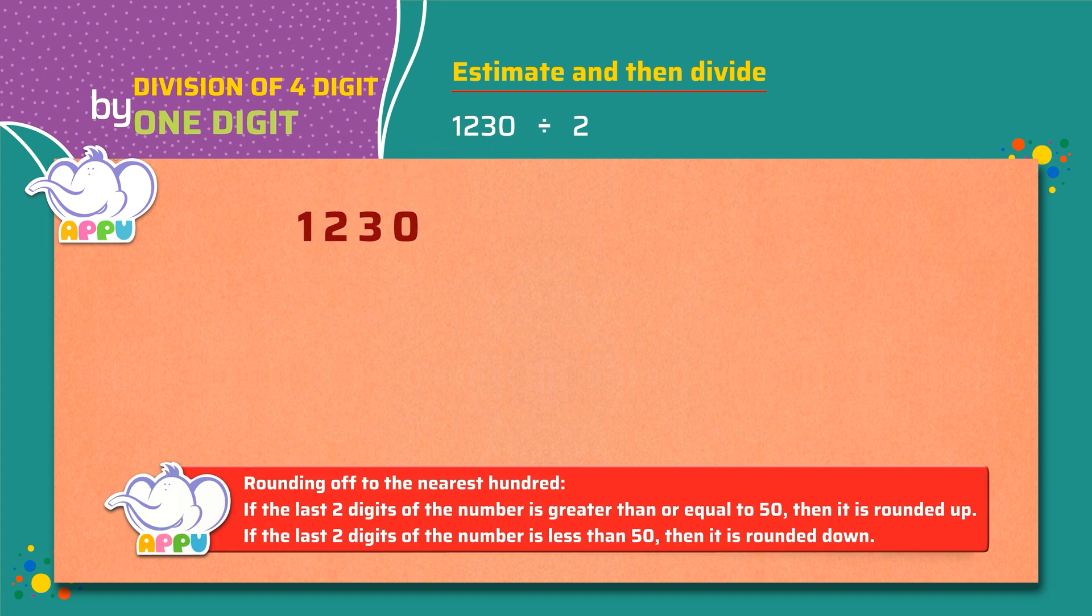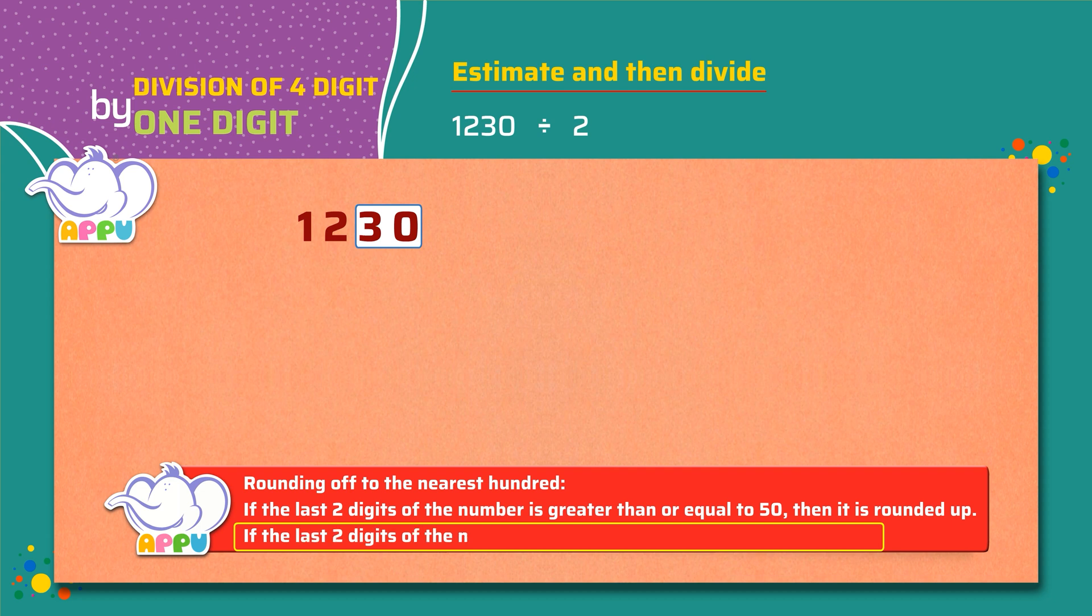Let's round off the number. If the last two digits of the number is less than 50 then it is rounded down. Over here 1230 becomes 1200.